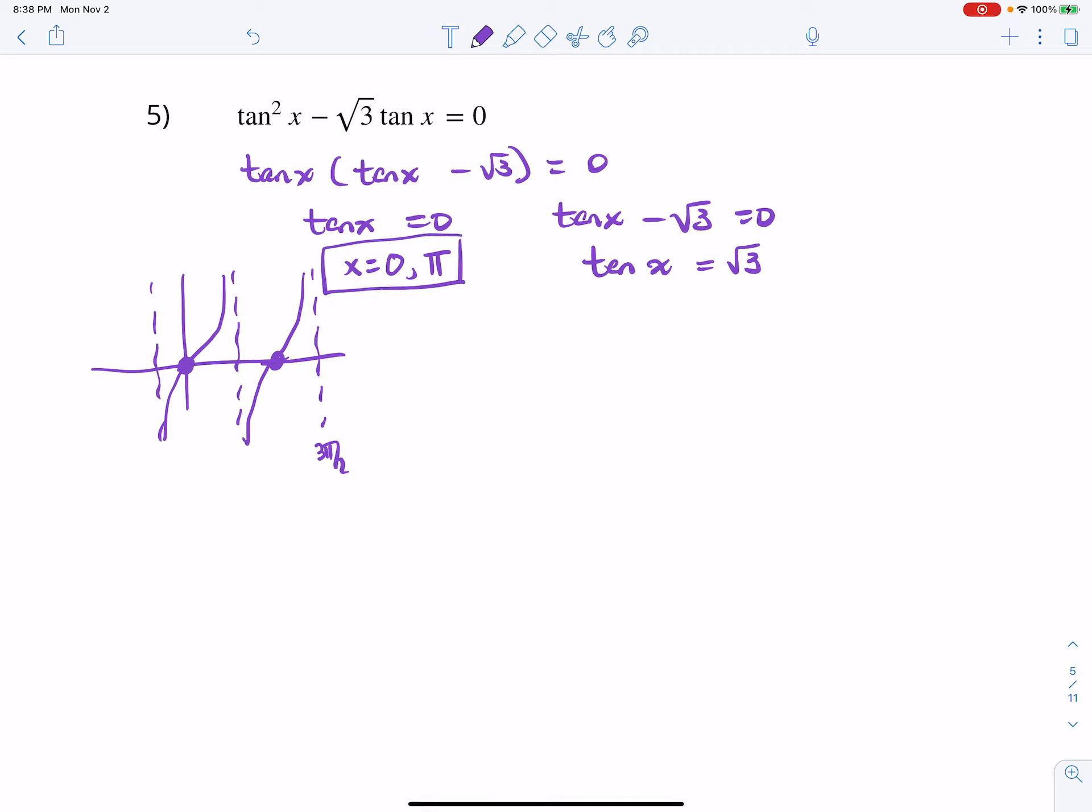So, there we can hopefully be comfortable getting the radian form right away. So, zero and pi were the solutions. Now, as far as square root of 3 goes, we know the tangent is positive in two quadrants, 1 and 3. So, we know that our angle is going to land in both of those two quadrants.